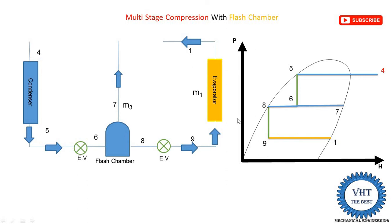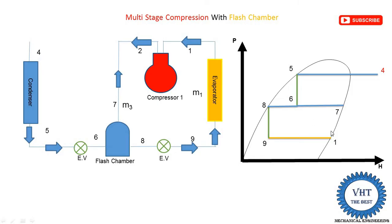Point one is the low pressure vapor refrigerant, which is supplied to compressor one, the low pressure compressor. Process one to two is isentropic compression, where pressure is increased from low pressure to intermediate pressure. On the p-H diagram, one to two follows the constant entropy curve line from low pressure up to the intermediate pressure line. If you are not familiar with these basic lines on the p-H diagram, watch my separate video on the p-H diagram.